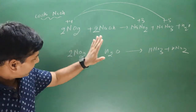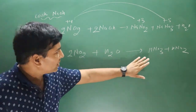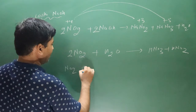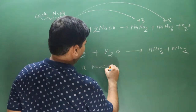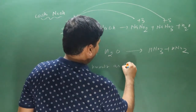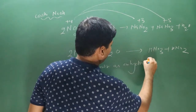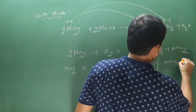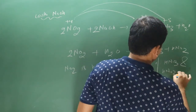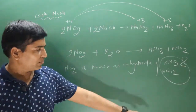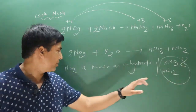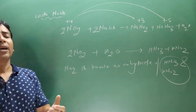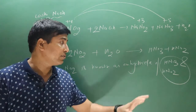Since NO2 produces both nitric acid and nitrous acid in the presence of water, NO2 is known as the anhydride of nitric acid and nitrous acid. If you remove water from these two acids, you get nitrogen dioxide.